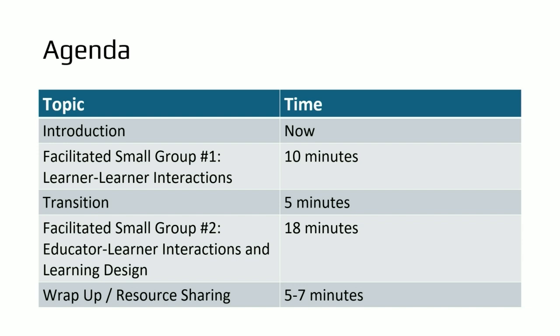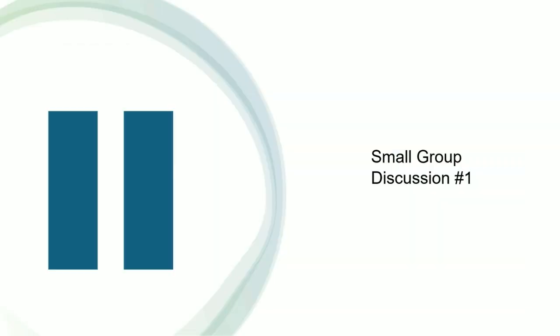Lars and Vivian on one side, Glenn and Mike on the other — those are your small group facilitators. We're going to transition to a small group discussion first, talking about learner-learner interactions and how learners can be primed to participate in balanced discussion. After that we'll do a transition talk, then think about educator-learner interactions and learning design, and then a quick wrap-up with resource sharing. Thank you for working with the suboptimal seating.